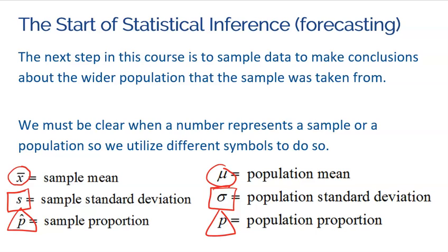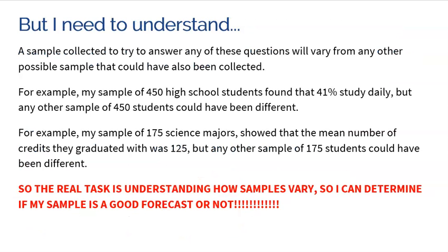That's something that's true for the entire population. And again, forecasting is this idea of using your sample mean as an accurate reflection or an accurate forecast of what that population mean could be, or the same thing for a sample proportion. We could take that sample proportion, hopefully we could accurately forecast what might be true for the entire population. So we're always using our sample data to hopefully forecast the population data. But I need you to understand a sample collected to try to answer any of these questions will vary from any other possible sample that could have also been collected. This is this idea of sampling variability.